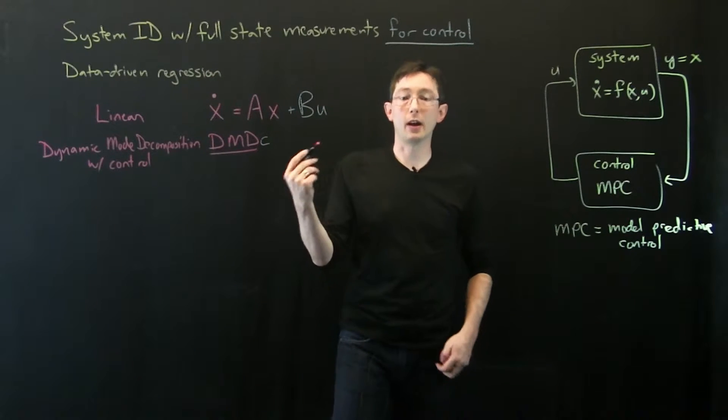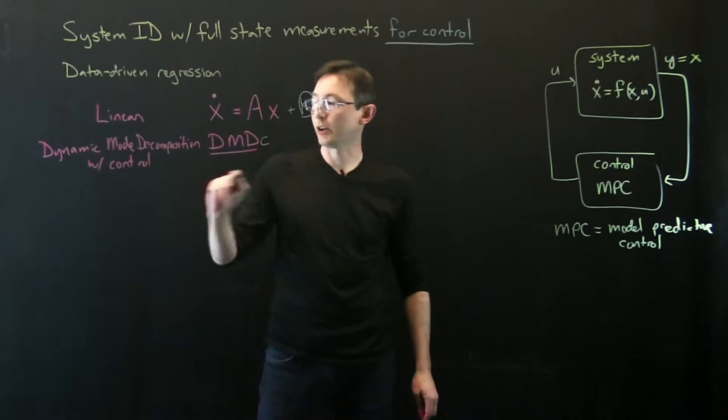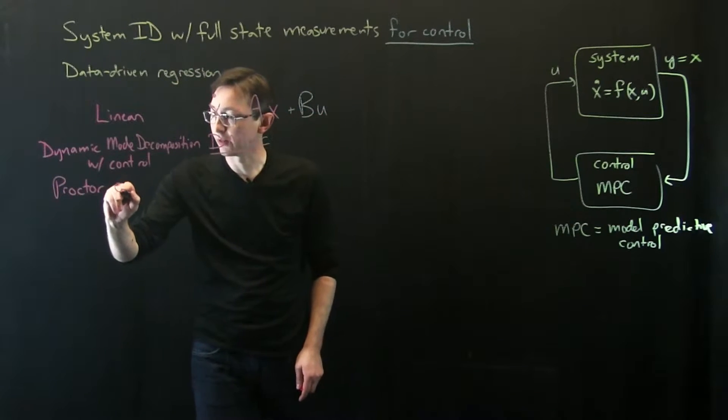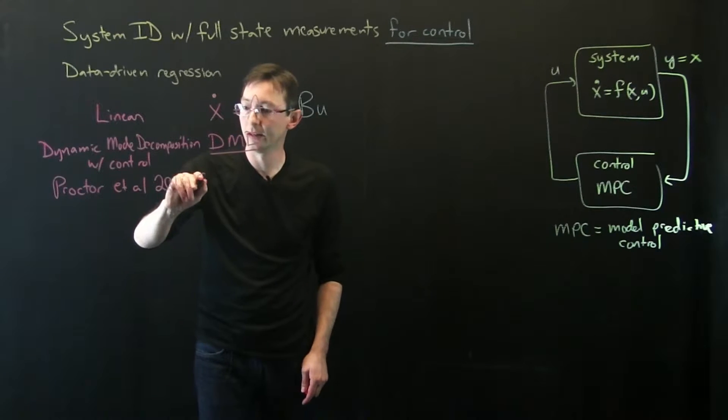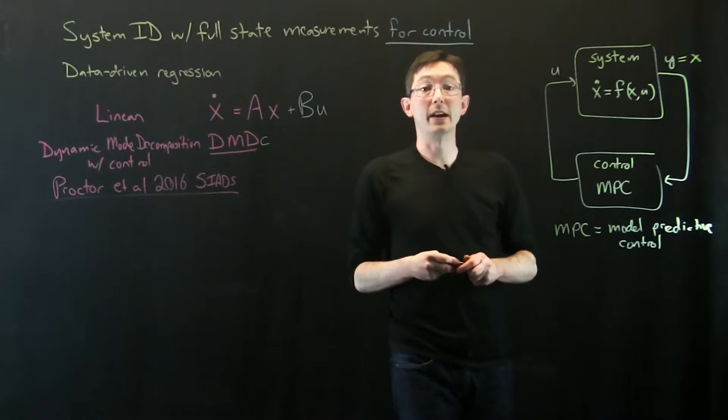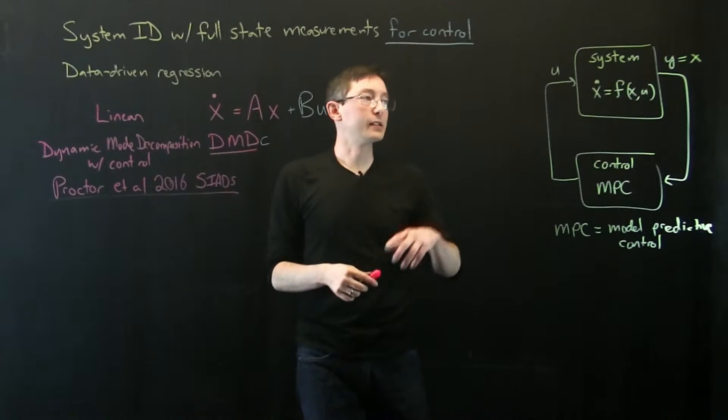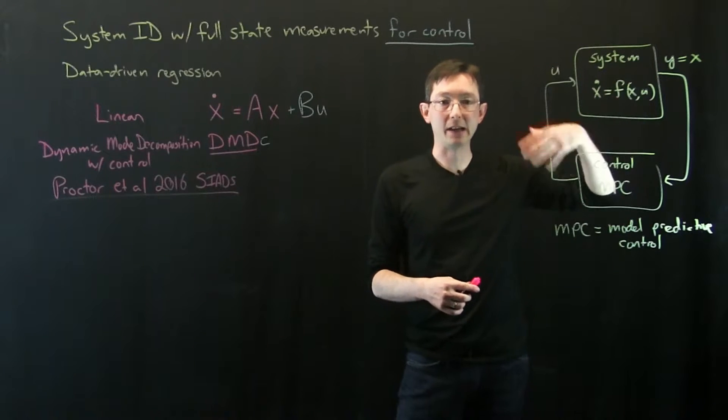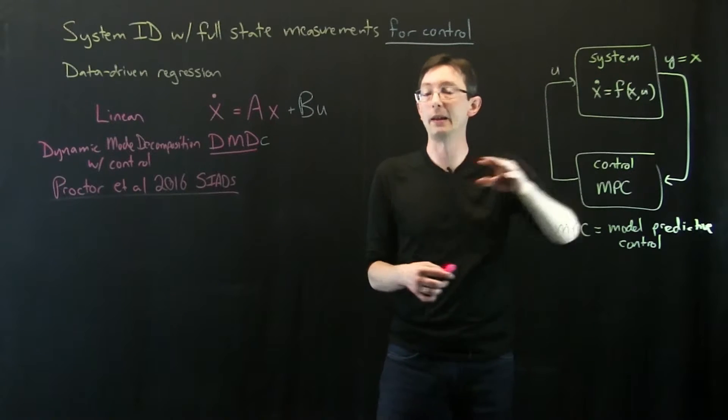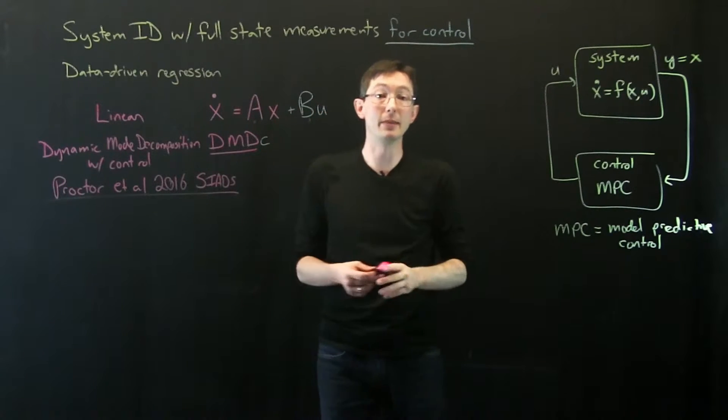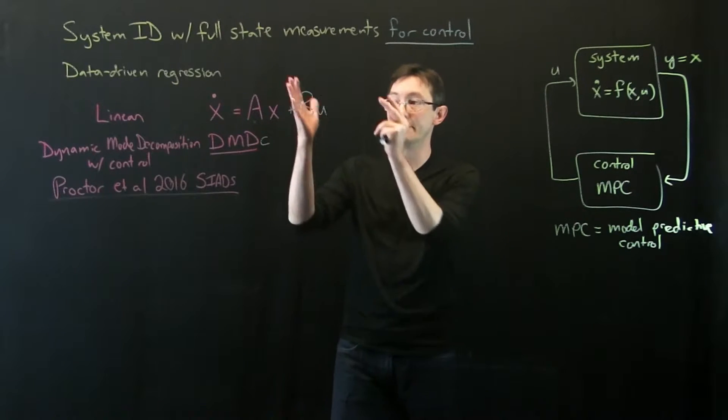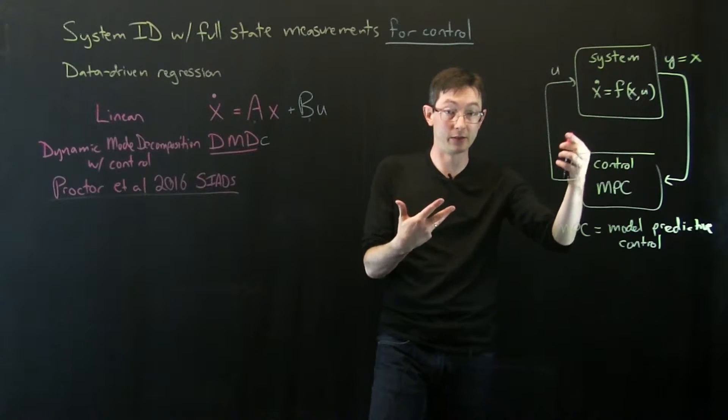This is work primarily by Josh Proctor along with myself and Nathan Kutz, Proctor et al. 2016. This is a SIAM journal paper. The basic idea is that I can have measurements of my system evolving in time, measurements of my control input U as it evolves in time, and I'm going to use regression to solve for these A and B matrices that best fit the observed measurements.